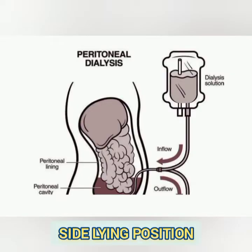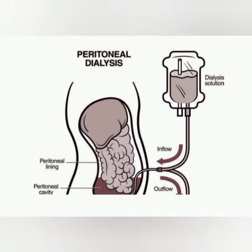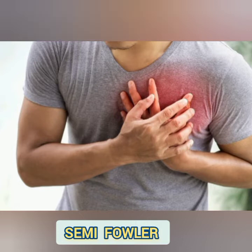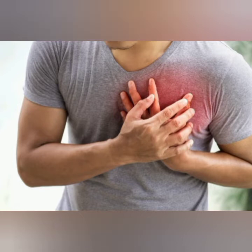The next procedure is peritoneal dialysis. The position followed during peritoneal dialysis is side-lying position. When outflow is inadequate, we turn the patient from side to side to facilitate drainage. Checking for kinks in the tubing also helps. If the catheter was placed in the last one to two weeks, there is a possibility of abdominal cramps. Cloudy outflow is never normal, so the clinician should assess the patient and manage the catheter according to the complications present.